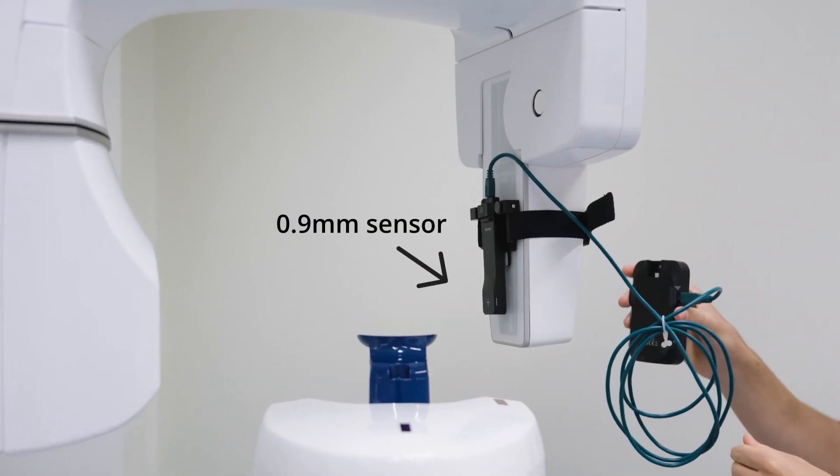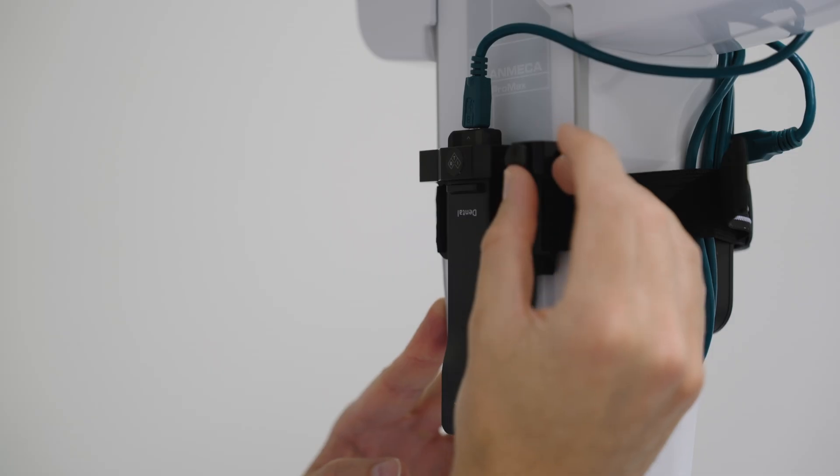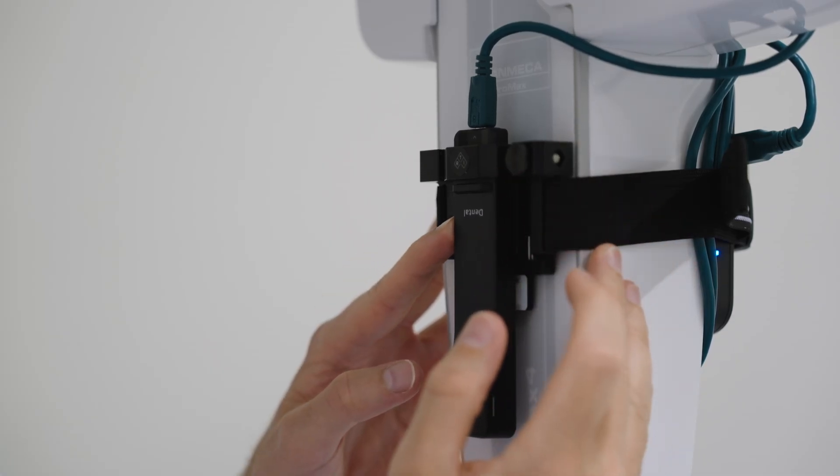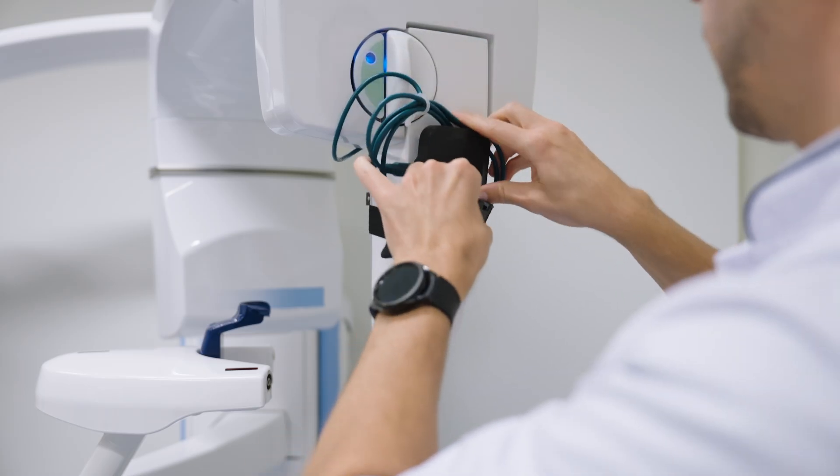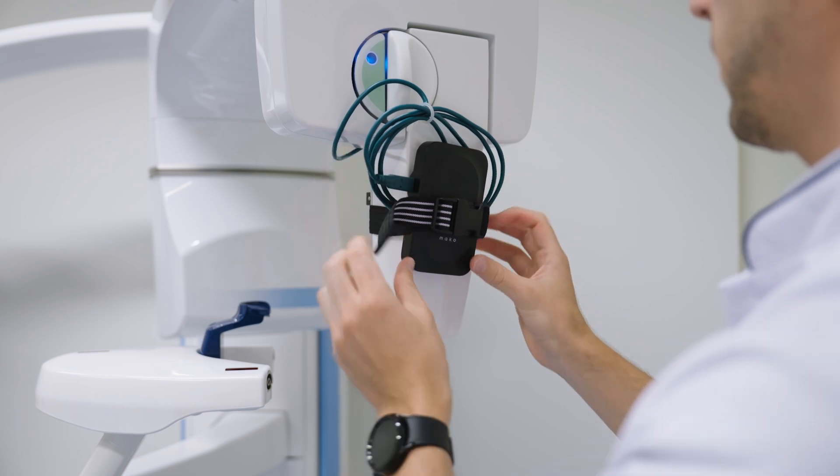The Mako dental probe has a sensor width down to 0.9 mm, important for measuring in narrow beam panoramic x-ray. If required, the position of the probe can be adjusted on the holder. The Mako base unit can be placed around the back of the system under the strap.